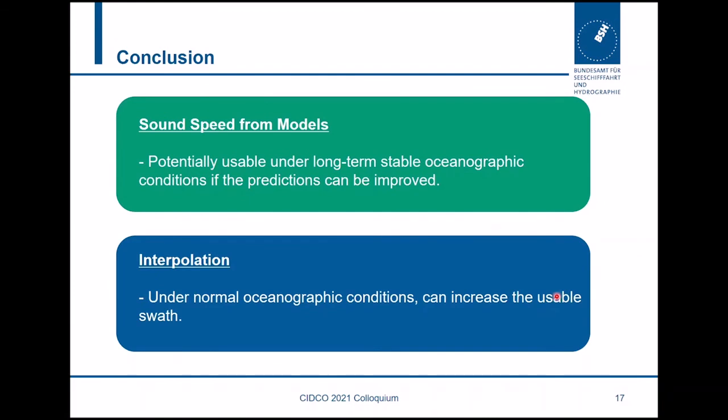To conclude, we see that sound speed profiles generated from models are potentially usable under long-term stable oceanographic conditions, especially if predictions could be improved in the future. There is potential there. From the point of view of interpolation, under our normal oceanographic conditions, we do see an increase in the usable swath. This is definitely a benefit of using interpolation.